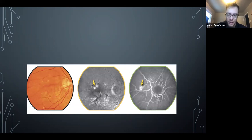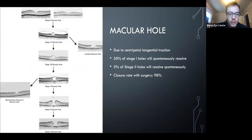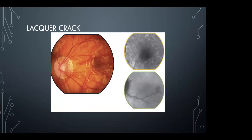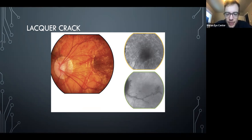Lacquer cracks look similar to angioid streaks but occur in high myopes. High myopes are at risk for myopic CNV, though it's uncertain whether CNV comes directly through the lacquer cracks themselves, as they may not represent true breaks in Bruch's membrane.